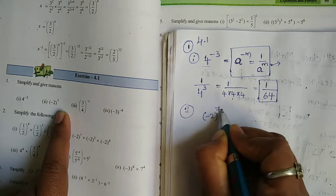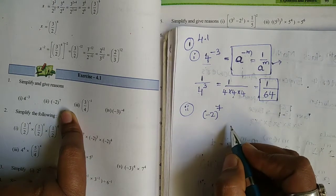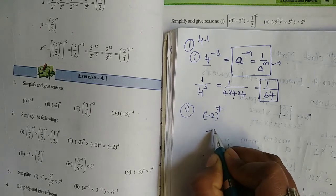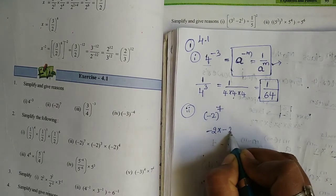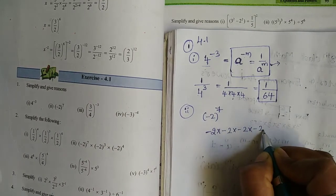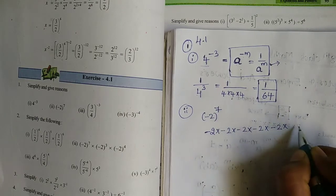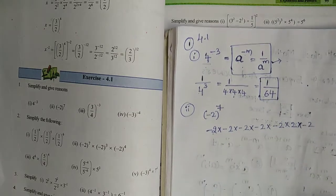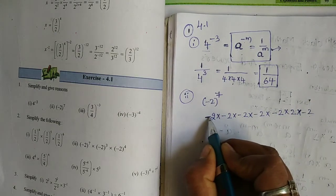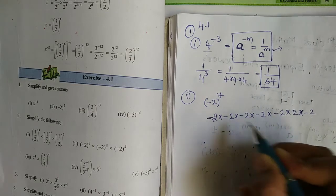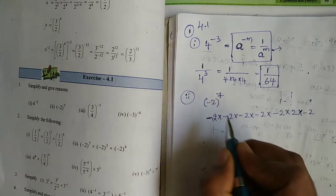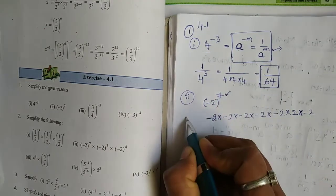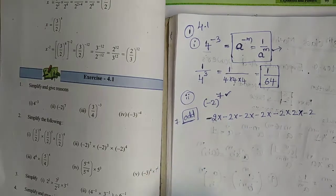Second problem: minus 2 whole to the power of 7. We expand this as minus 2 into minus 2 into minus 2 into minus 2 into minus 2 into minus 2 into minus 2 — seven times. My exponent here is 7, which is an odd number.